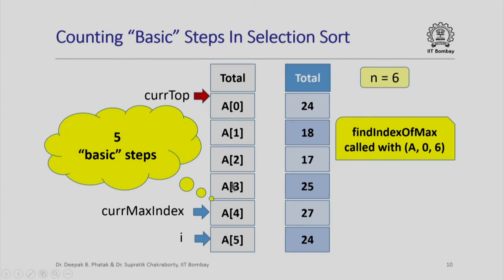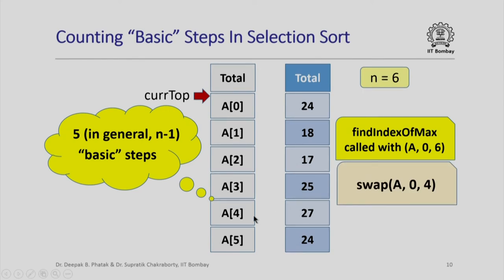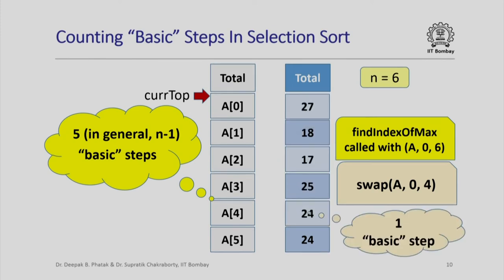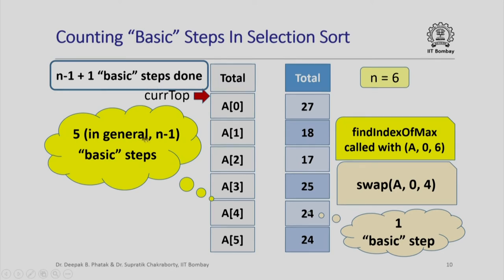In addition, I need to swap: current_max_index is pointing at the maximum element and I need to swap it with current_top — that is one more basic step. So in total, the first iteration executes n-1 basic steps inside find_index_of_max and one basic step inside swap.